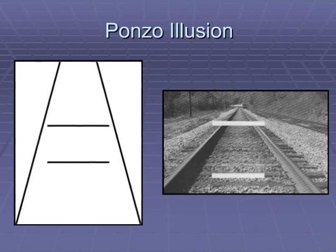Another culturally affected illusion is the Ponzo illusion, proposed by Mario Ponzo in 1913, also called the train track illusion. If we see these two lines, which one's bigger? They're really the same size, but the top one tends to look bigger because of the effect of linear perspective. And when linear perspective comes into play, it influences the way we look at things.